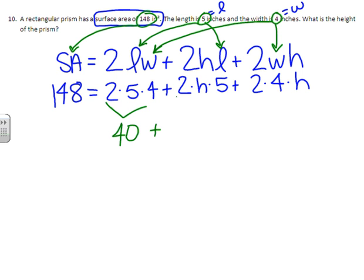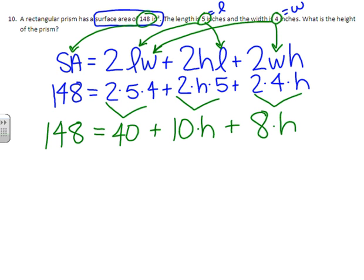Plus 2 times 5 is 10, so that's 10 times H. Plus 2 times 4 is 8, so that's 8 times H. And then we're going to bring down 148. Let's keep going. So we can combine 10 H's with 8 H's to get 18 H's. Bring everything else down.